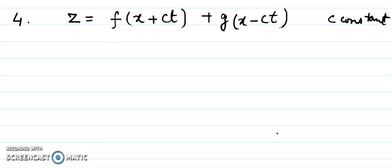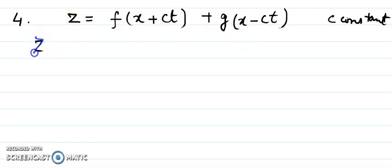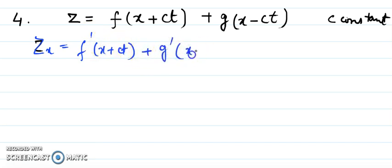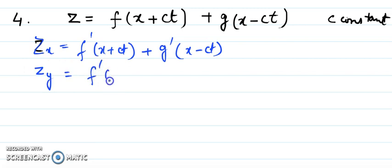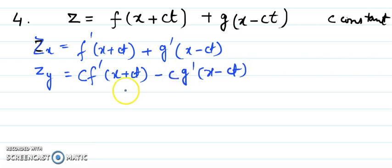For the last example, z = f(x + ct) + g(x - ct). Here there are two arbitrary functions, so we need a second-order differential equation. Differentiating with respect to x: z_x = f'(x+ct)·1 + g'(x-ct)·1. Differentiating with respect to t: z_t = f'(x+ct)·c + g'(x-ct)·(-c).